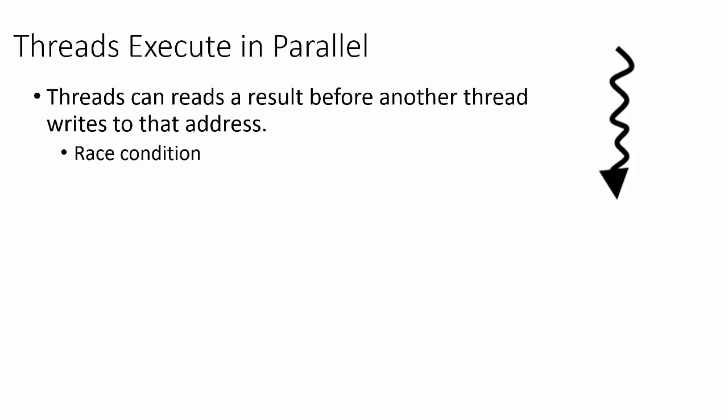Since threads are allowed to run in parallel, we can easily run into race conditions. The most common form of race condition occurs when a thread reads from a memory location before the correct data has been stored into that memory location, or vice versa, if a thread writes its results to a specific memory location before another thread has read the data from that location.